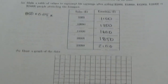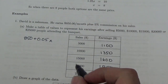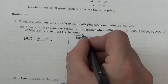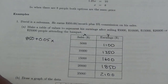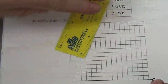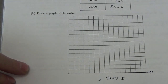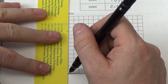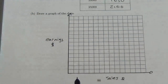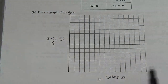Now we're going to draw a graph on our grid. Before we do that, we need to decide which is the dependent variable and which is the independent variable. Does his earnings depend on his sales? Yes — so sales will be X and earnings will be Y. Along the x-axis I'll put sales in dollars, and along the y-axis I'll put earnings in dollars. The amount of money he earns depends on the amount of money he sells for the company.